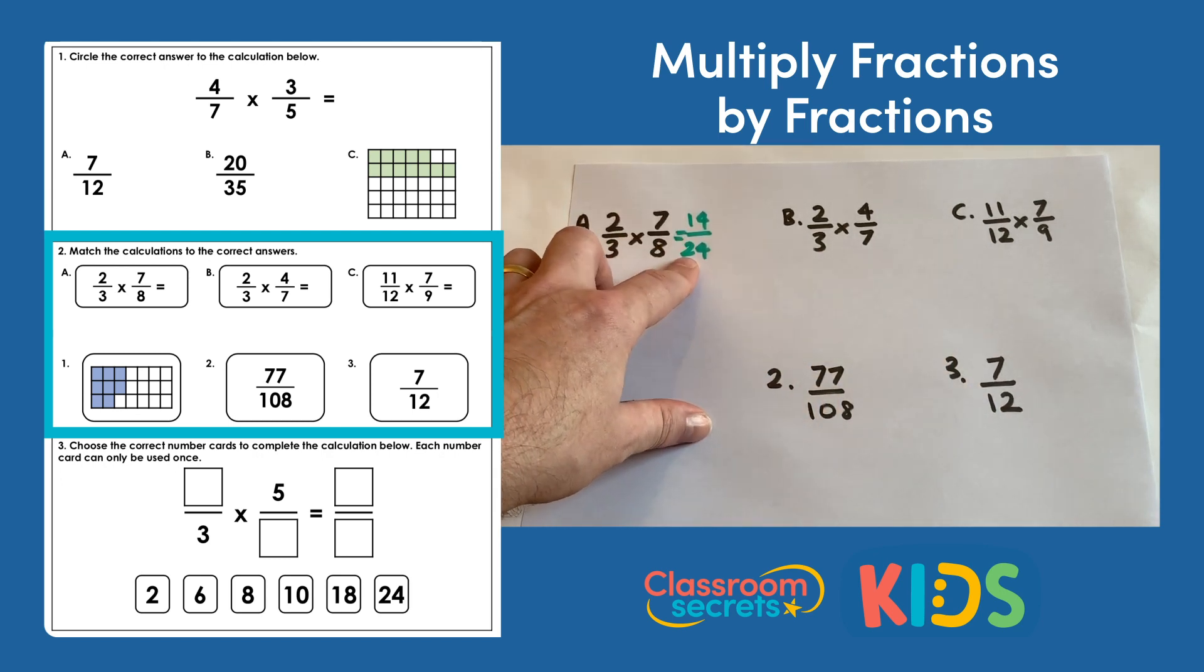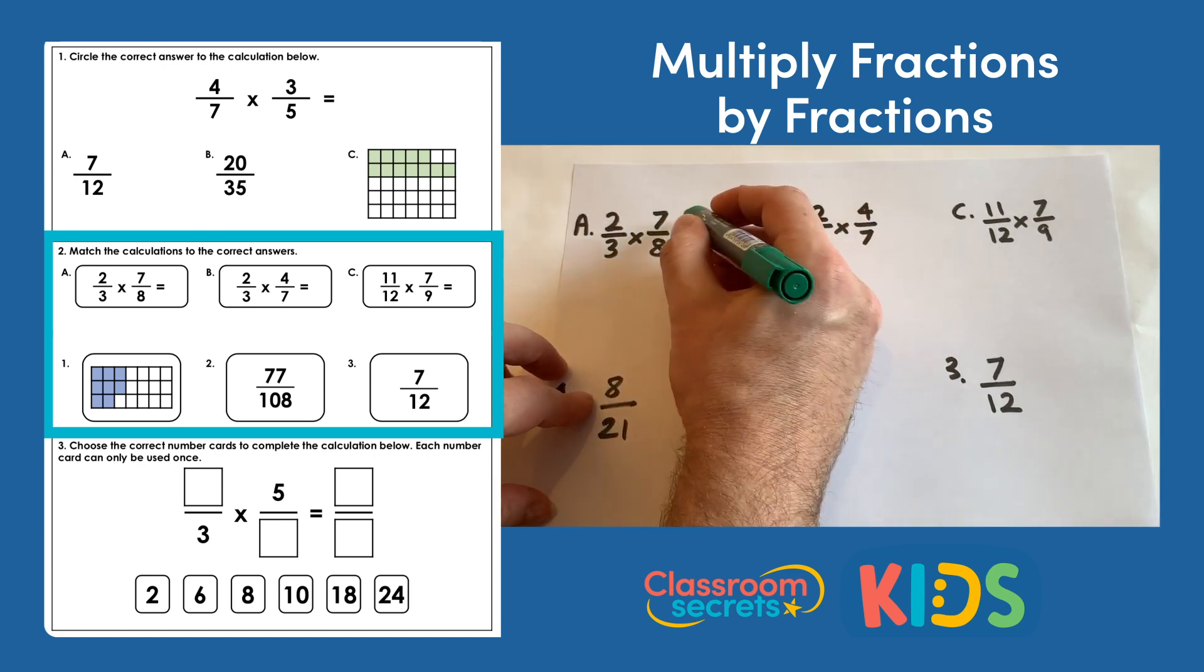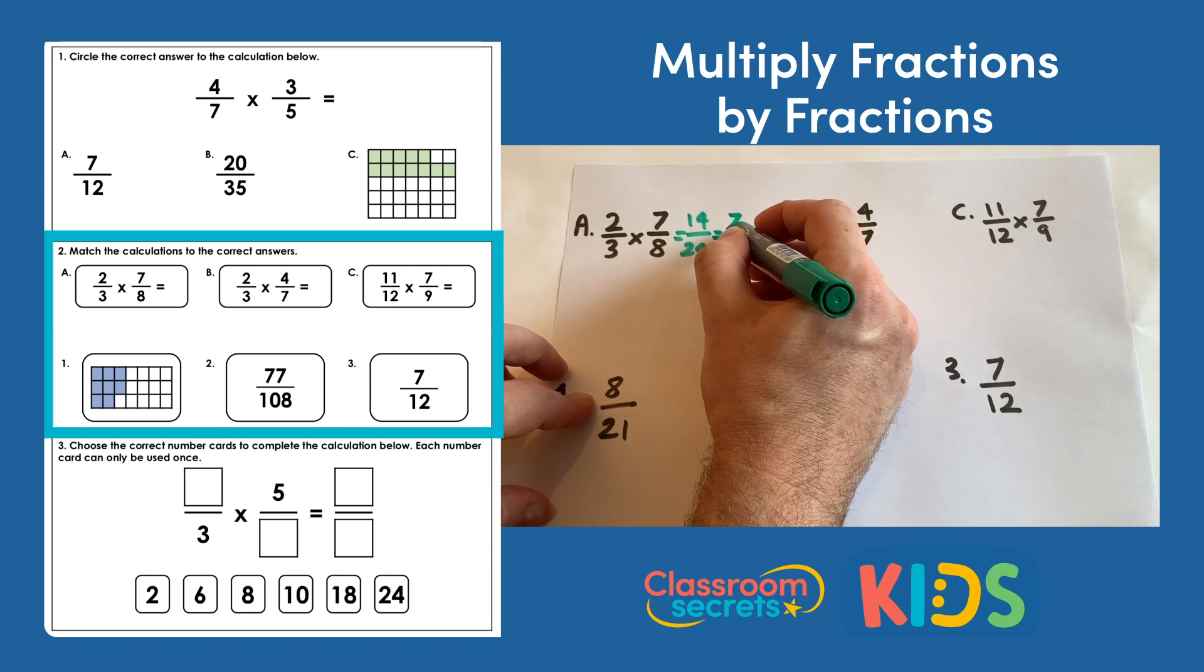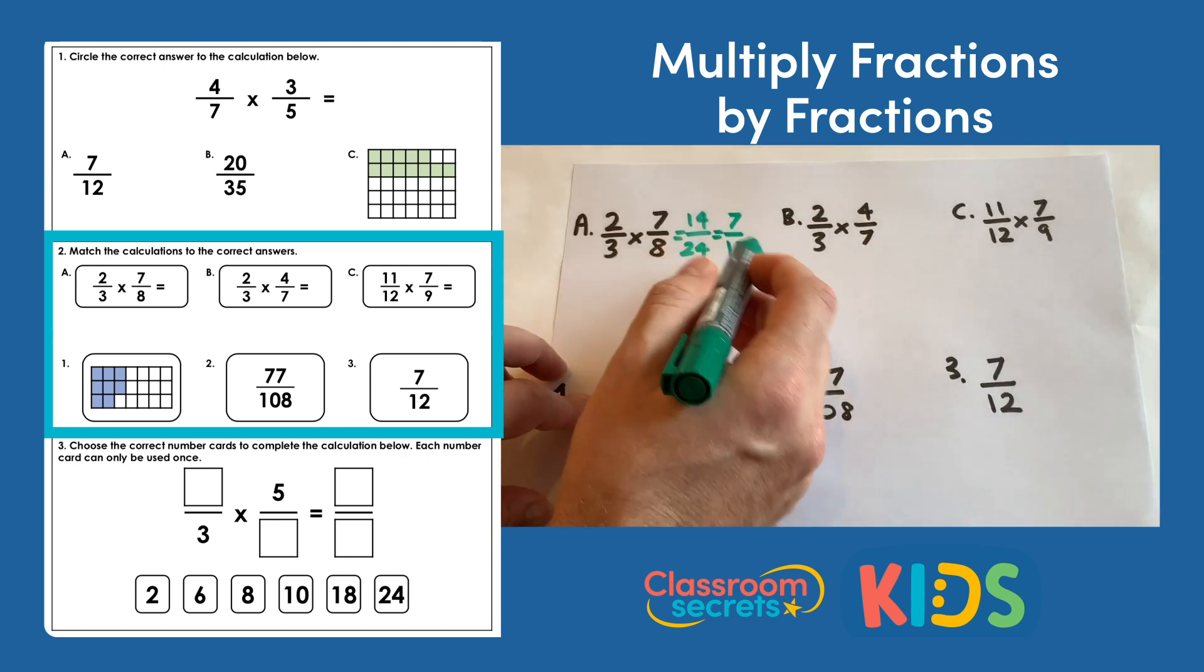If we look at our answers, we don't actually have 14/24 as one of our possible answers, but we can cancel this fraction down. We need to find the highest factor that can go into 14 and 24, and that would be 2. So we divide 14 by 2, which is 7, and 24 divided by 2 will be 12, so that is 7/12.